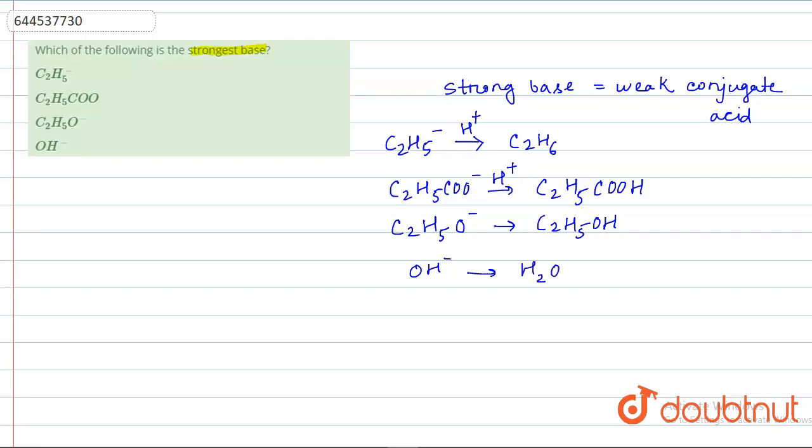If we look at C2H5COOH, which is propanoic acid, and C2H5OH, which is ethanol, both of these can donate H+. But if we look at C2H6, that is ethane, ethane will not